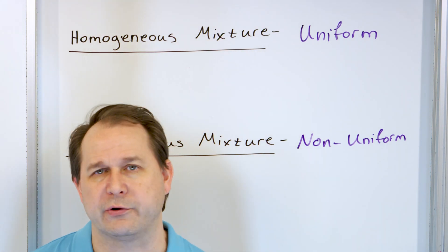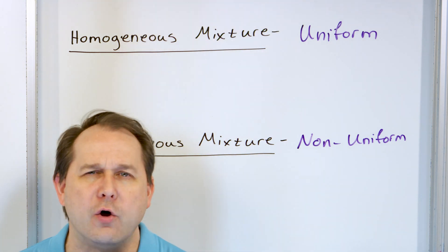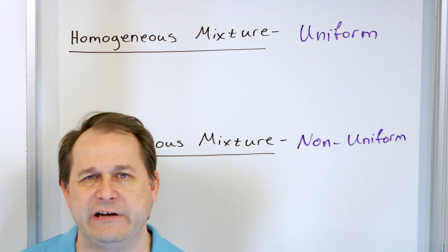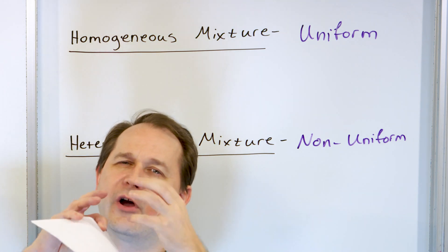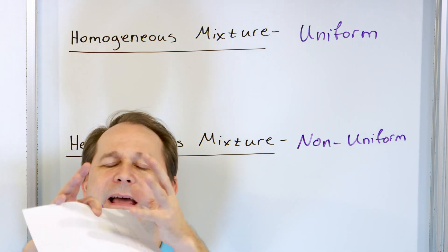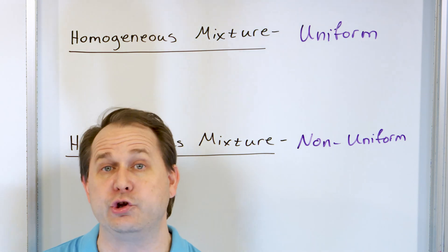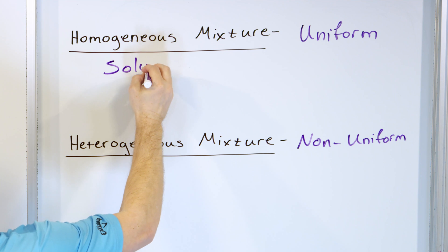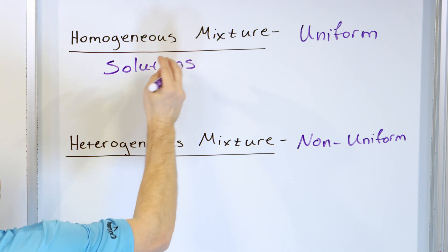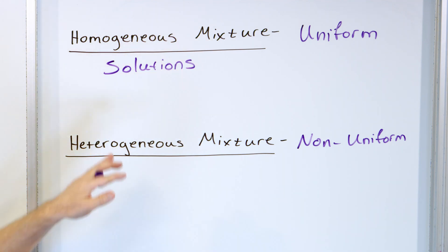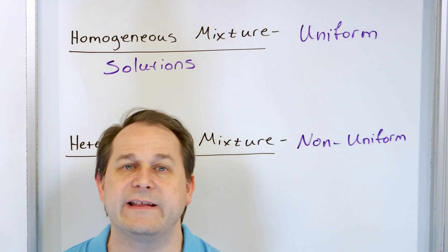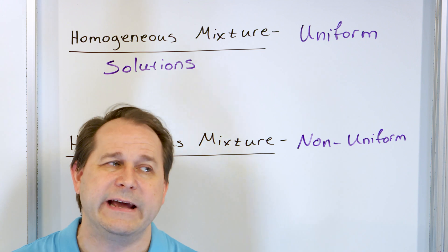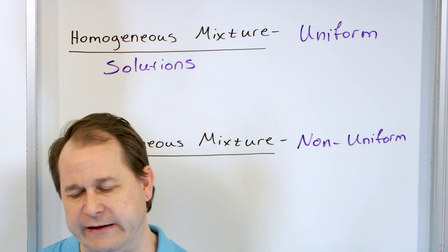All of the solutions we're talking about — like water, salt water, sugar water, chemical solutions — those are all homogeneous mixtures. Because once you dissolve something and break it down, it makes its way throughout the entire solution in a uniform way. Solutions are the main reason we're talking about mixtures, because a lot of chemistry happens in solutions.